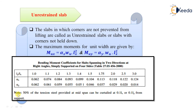Note that 50% of the tension steel provided at mid-span can be curtailed at 0.1 × LX or 0.1 × LY from the support. That means at least 50% of the tension reinforcement provided at mid-span should extend to the support, and the remaining 50% should extend to within 0.1 LX or 0.1 LY of the support, as appropriate.